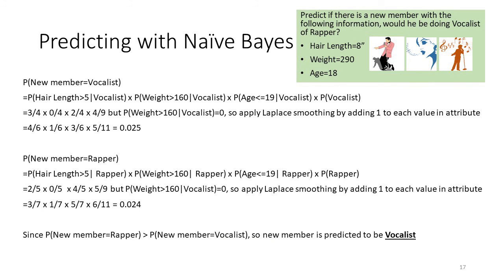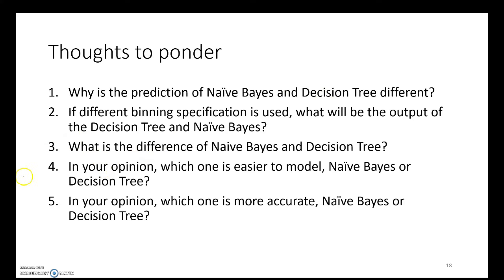That finishes the tutorial on decision tree. The next part covers Naive Bayes, and we'll see that using Naive Bayes the output is different compared to what was detected by the decision tree. The next video will discuss why this happens. See you next time, thank you.